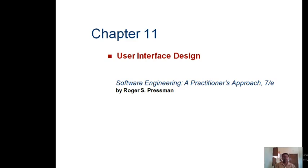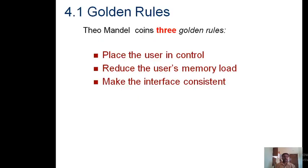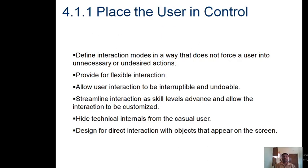In this chapter of user interface design, the first concept is golden rules. Theo Mandel suggested three different golden rules for designing the user interface. Those are: first, place the user in control; second, reduce the user's memory load; third, make the interface consistent.